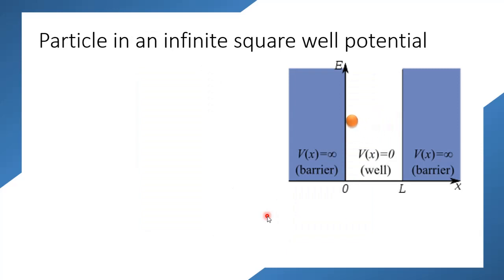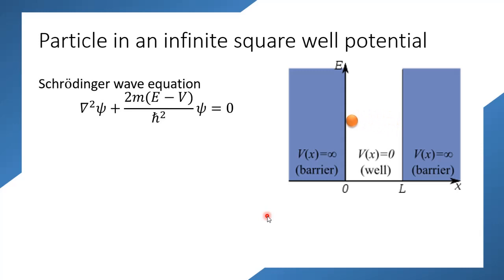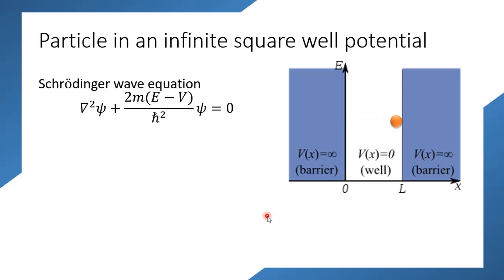Now let us analyze how a particle behaves in an infinite square well potential. We have already said that the Schrodinger wave equation determines how a microscopic particle behaves — analogous to how Newton's equations of motion regulate the dynamics of a body in a classical system, the Schrodinger wave equation tells us how the body will behave in a quantum system.